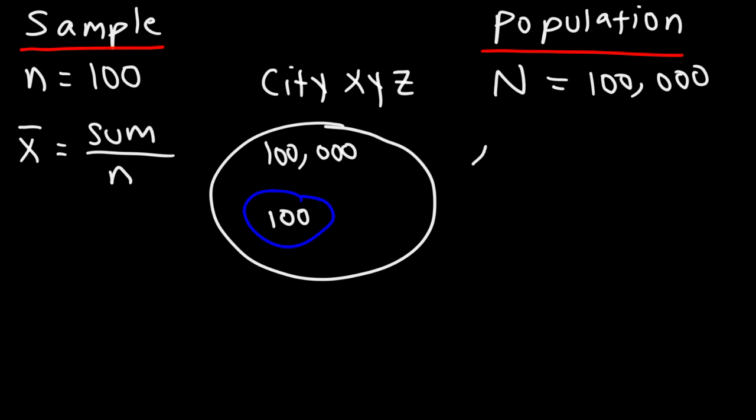The population mean, represented by the Greek letter mu, is also the sum divided by N, where N is the number of people in the entire city. This is the entire population.